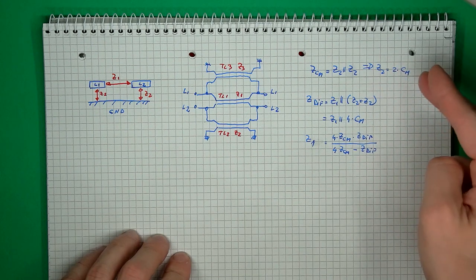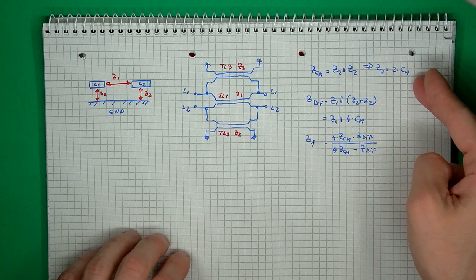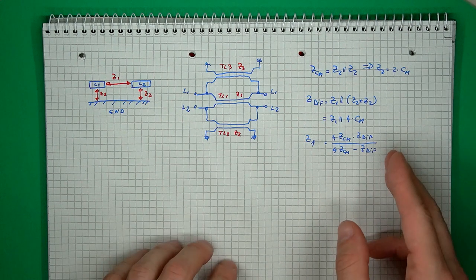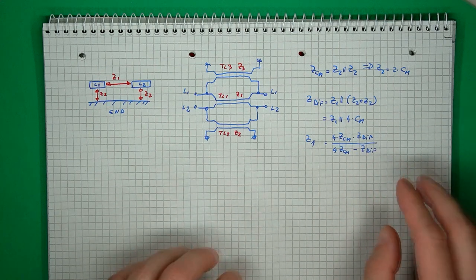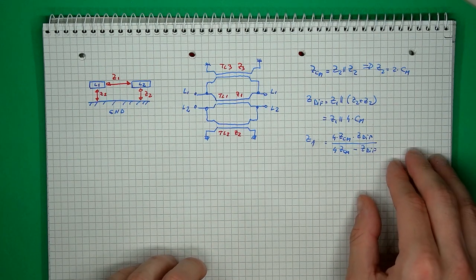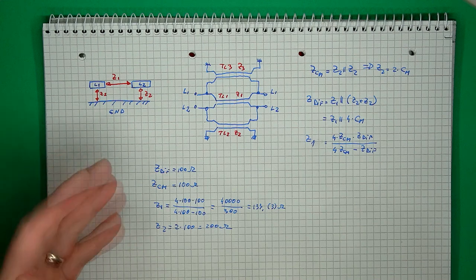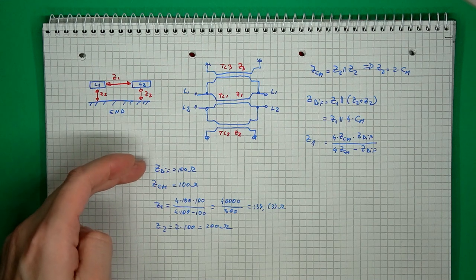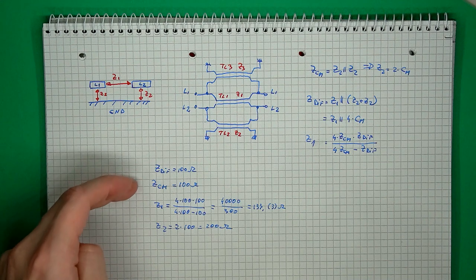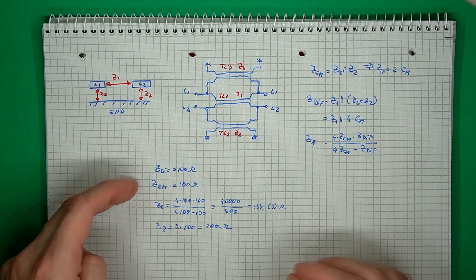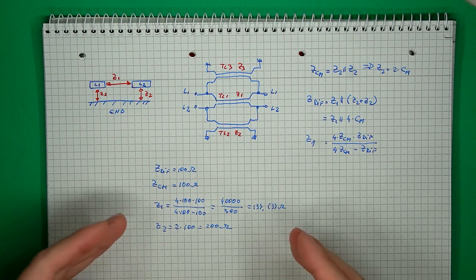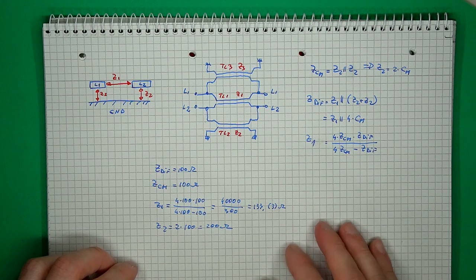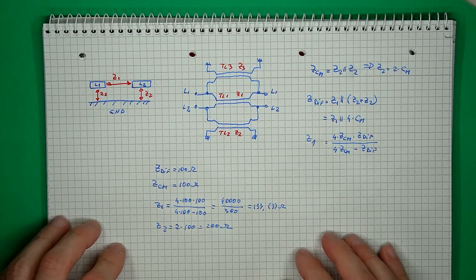Each ground impedance will be double that of the common mode impedance, and the other impedance can be defined based on both the common and differential mode impedance values. To test, let's consider an example structure with 100 ohms of differential impedance and 100 ohms of common mode impedance. Using our formulas, this gives us the following values for the two transmission line impedances — now let's test things out in the circuit simulator.